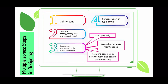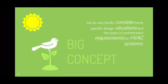For selection — item number three — you must size properly, it must be accessible for easy maintenance. You cannot build them inside a wall and then have to break the wall down in five years when maintenance is needed, as that is very costly. It must not be complex. The big concept in designing is to consider the specific design situations and the type of performance requirements you want.